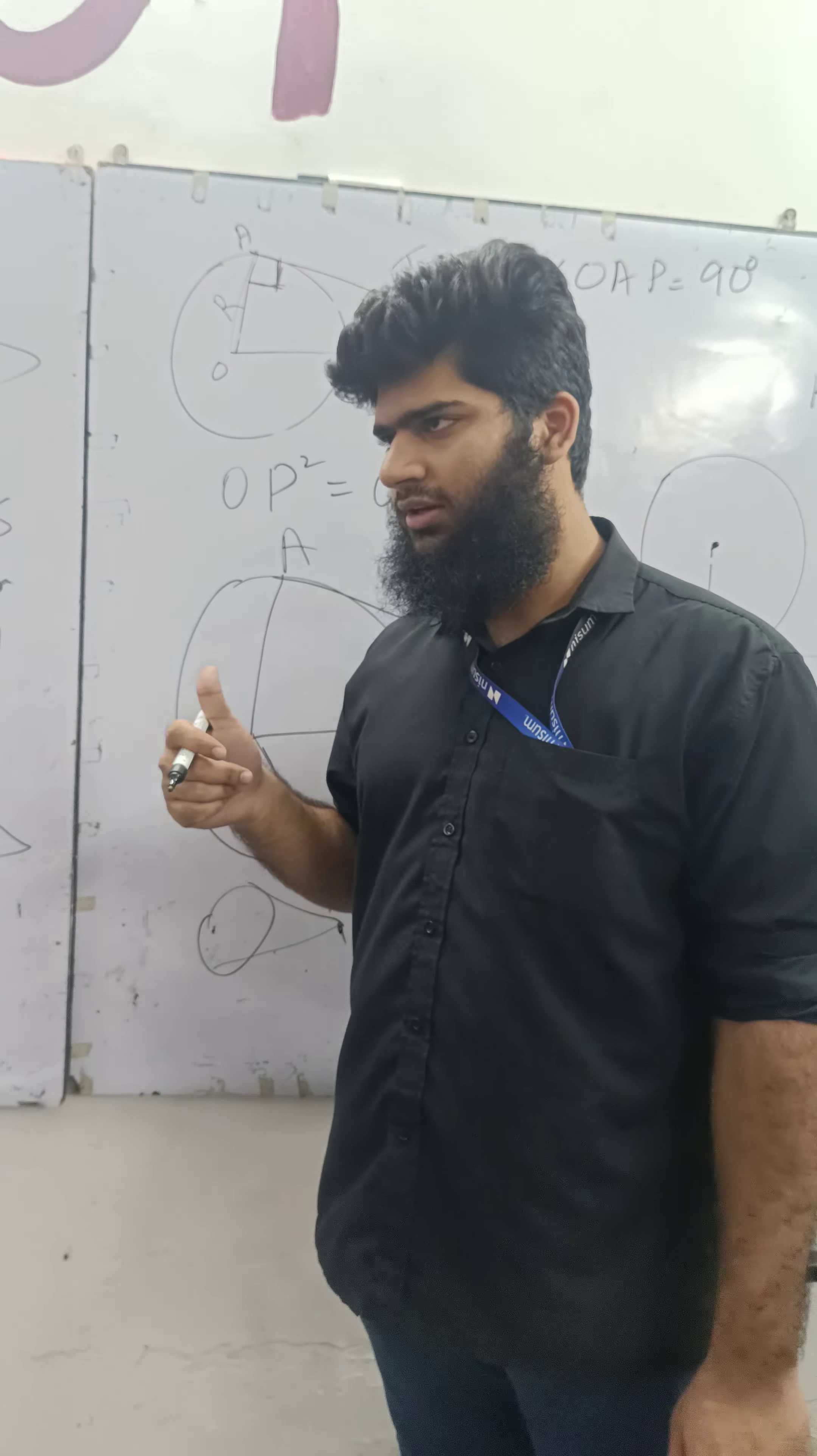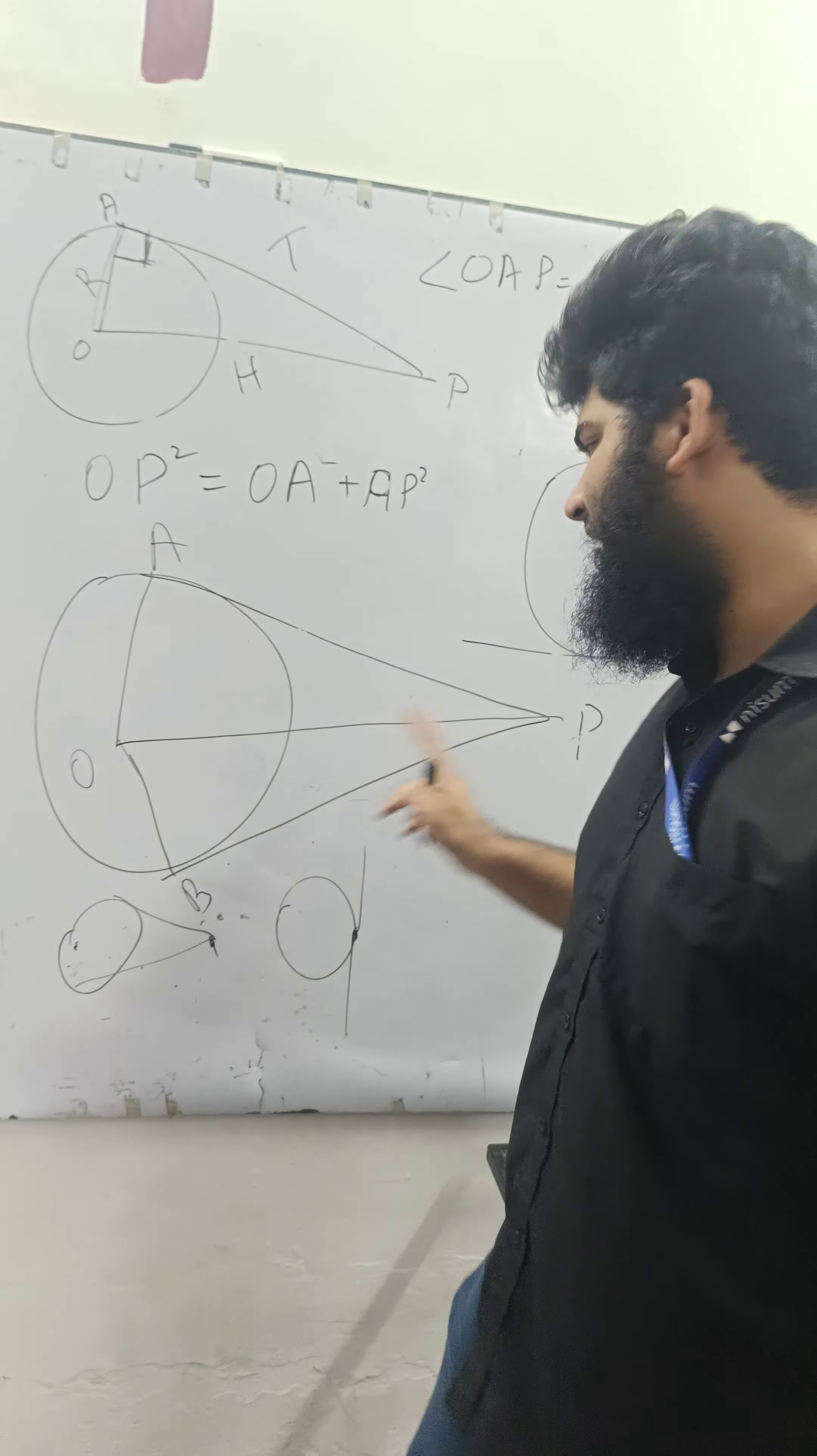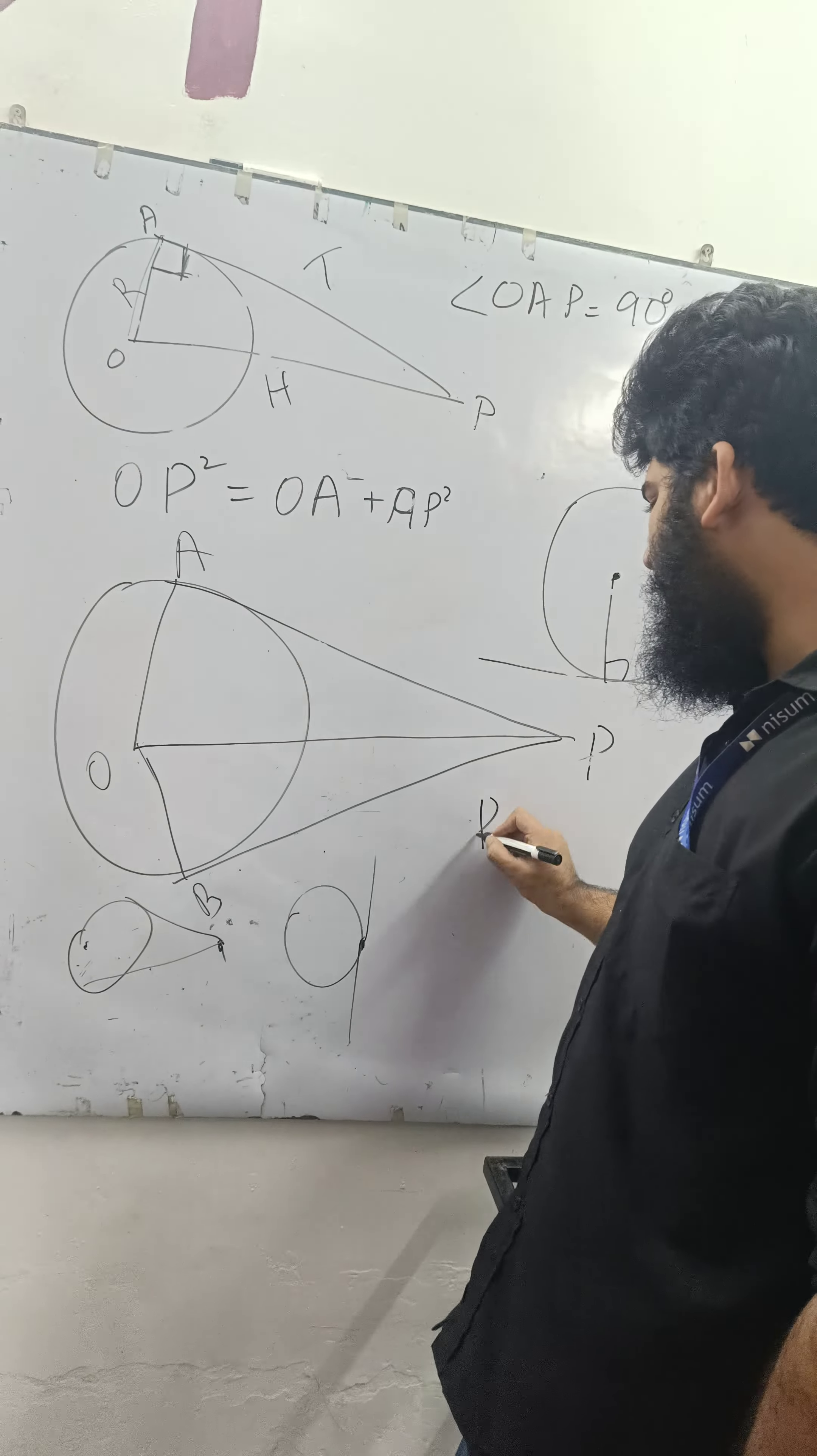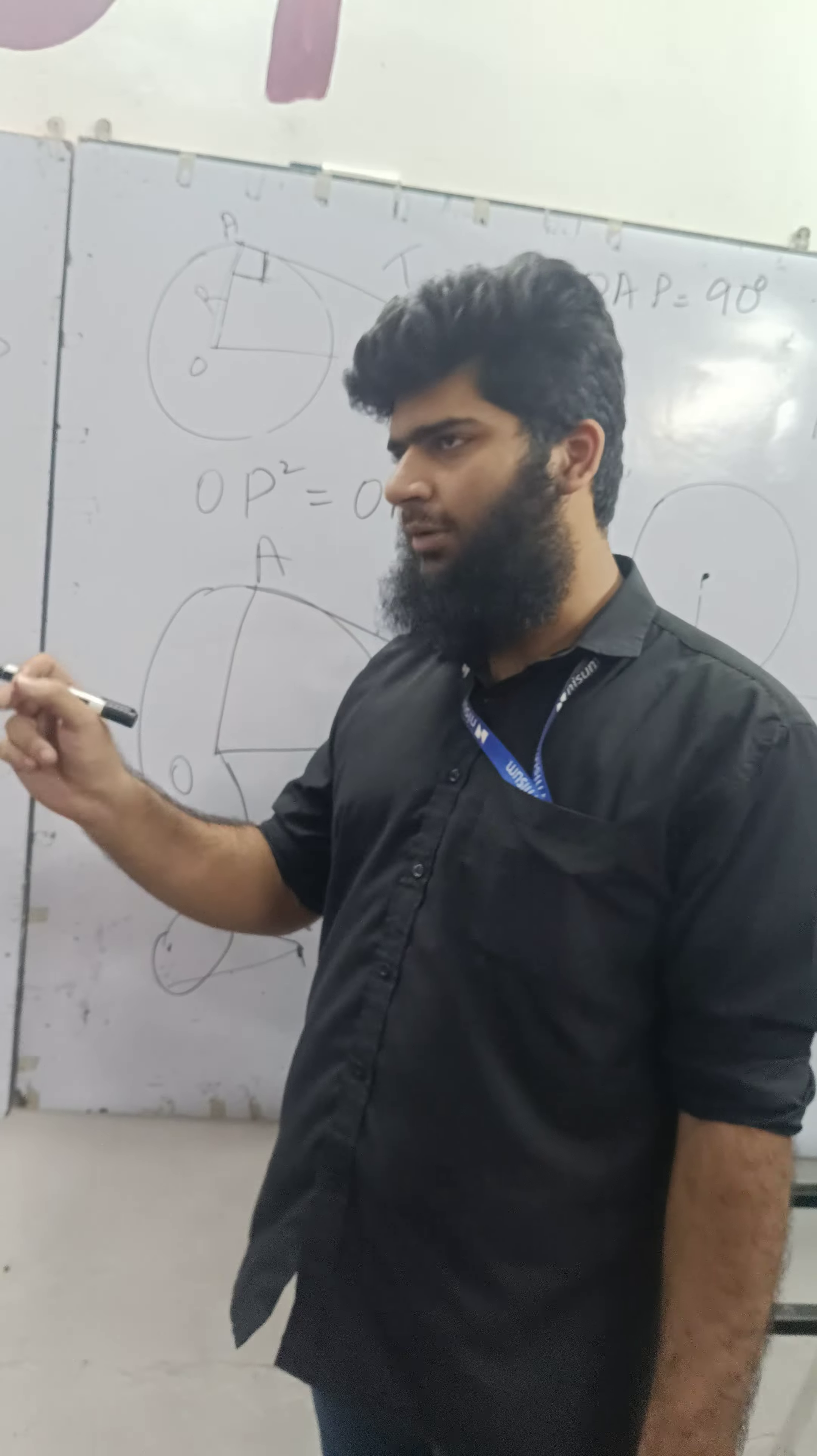If you are drawing tangents from a point outside the circle, we can draw two tangents because the length of the tangent will be equal. That means PA is equal to PB according to theorem chapter 9.2.